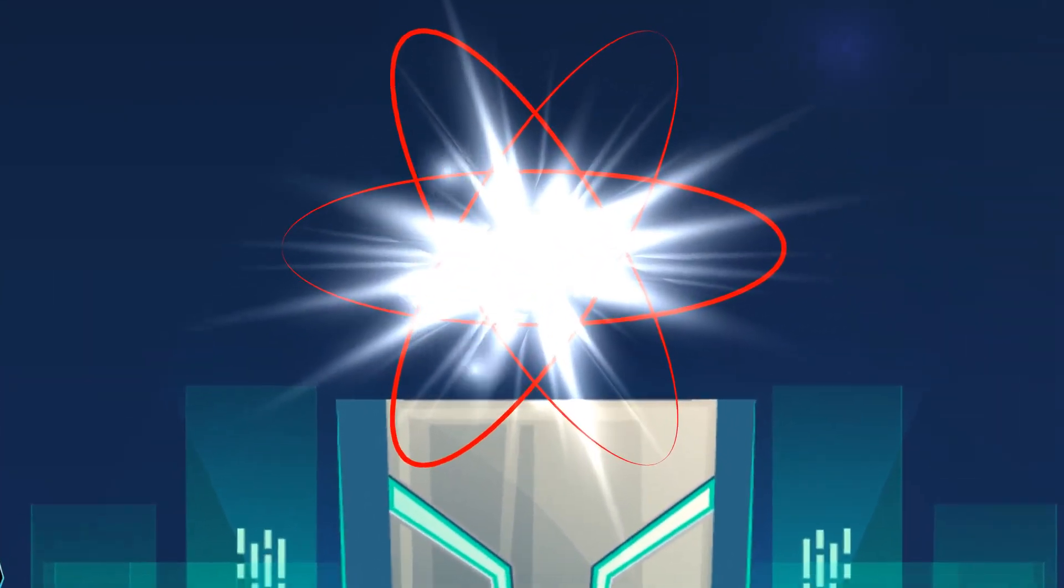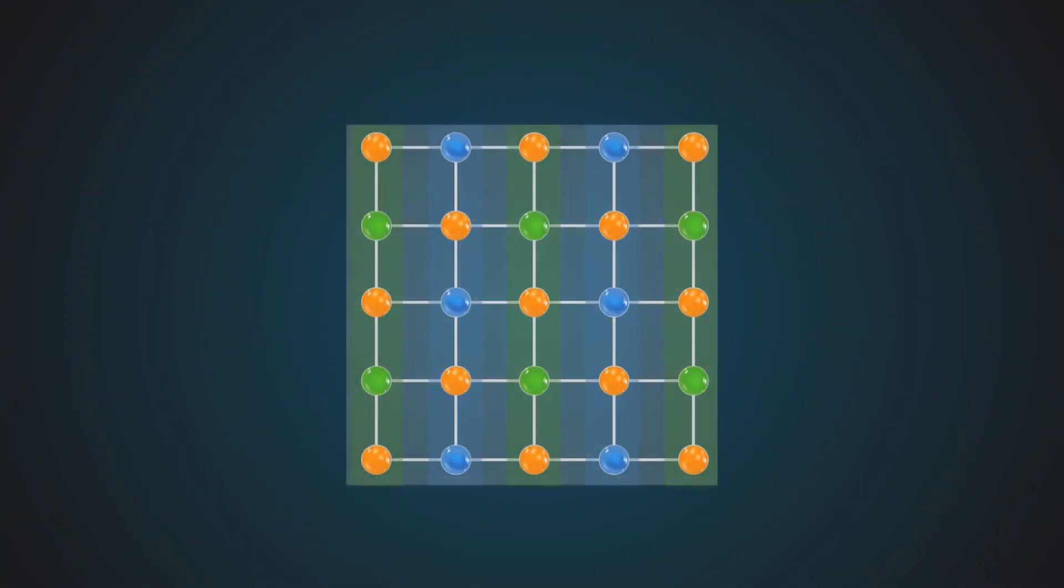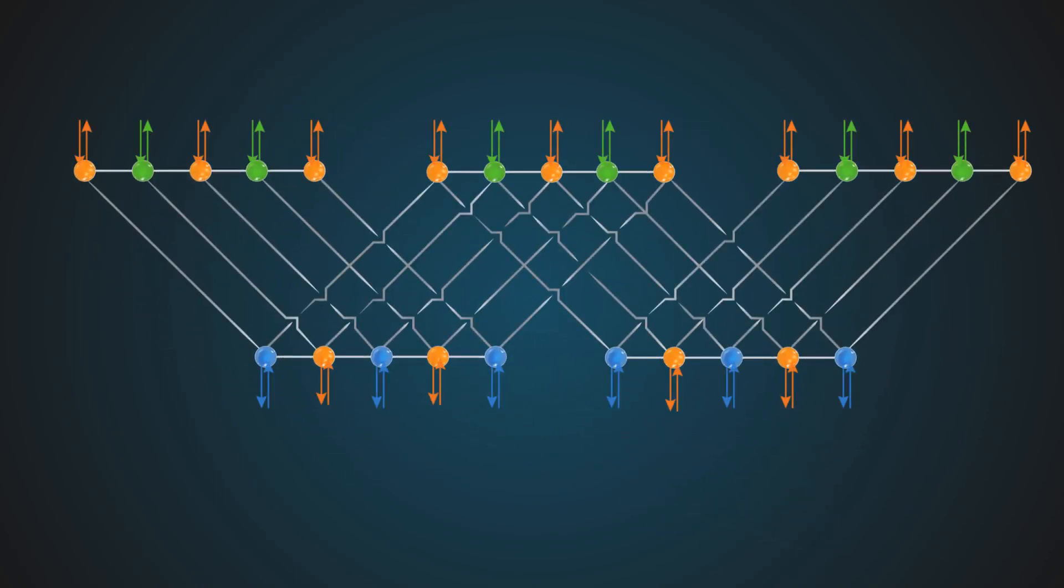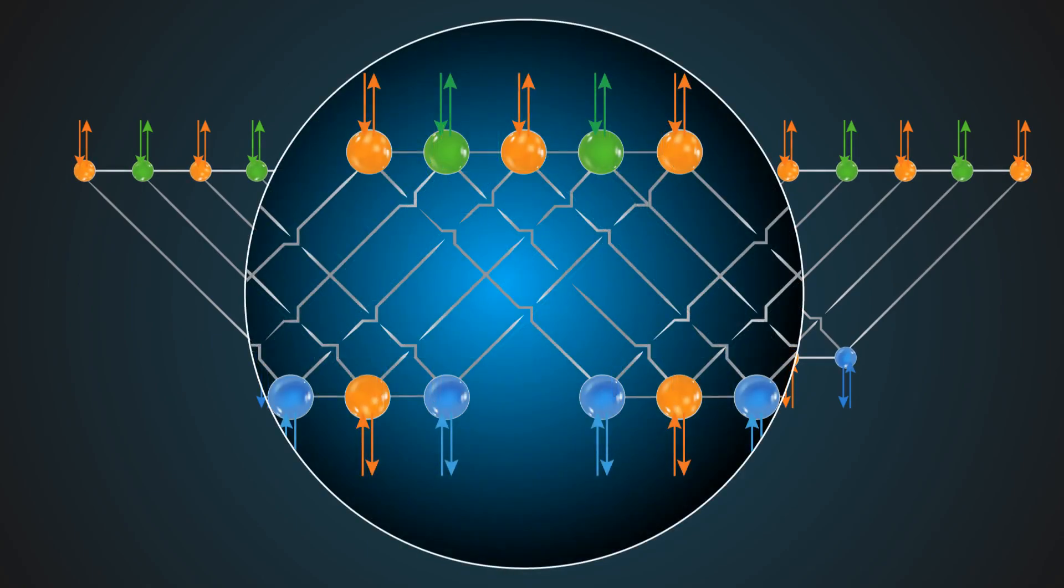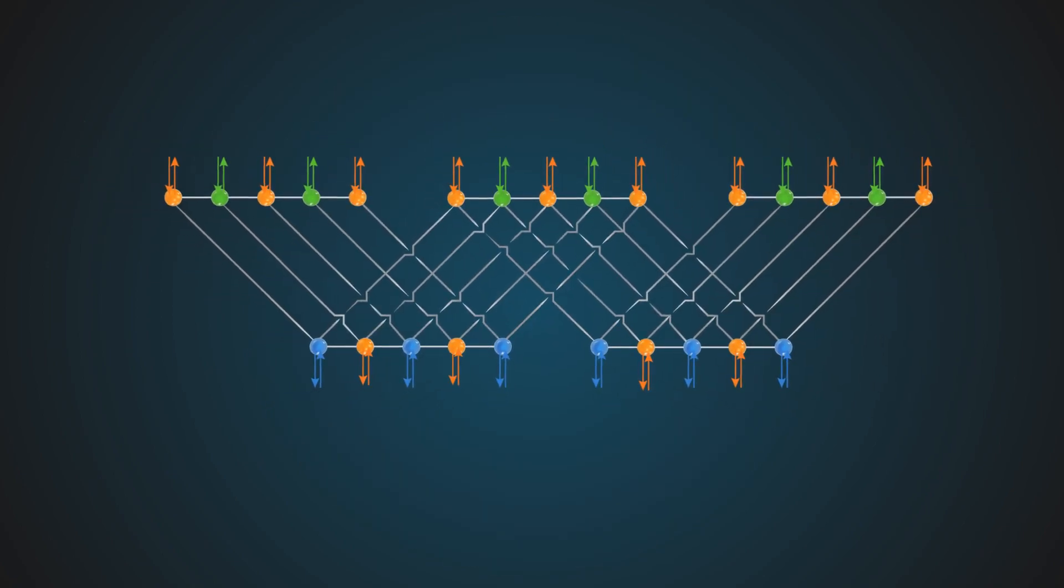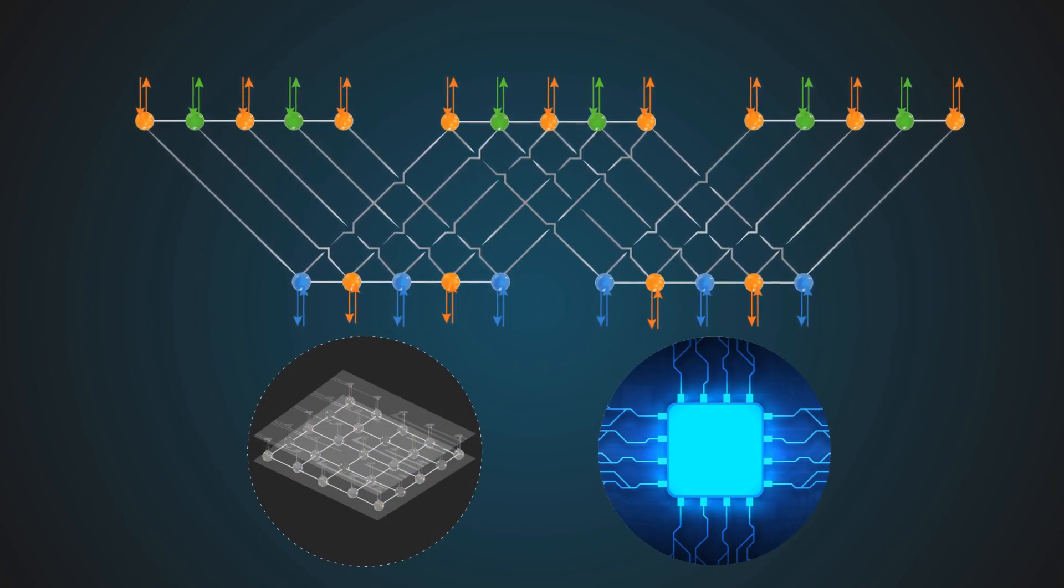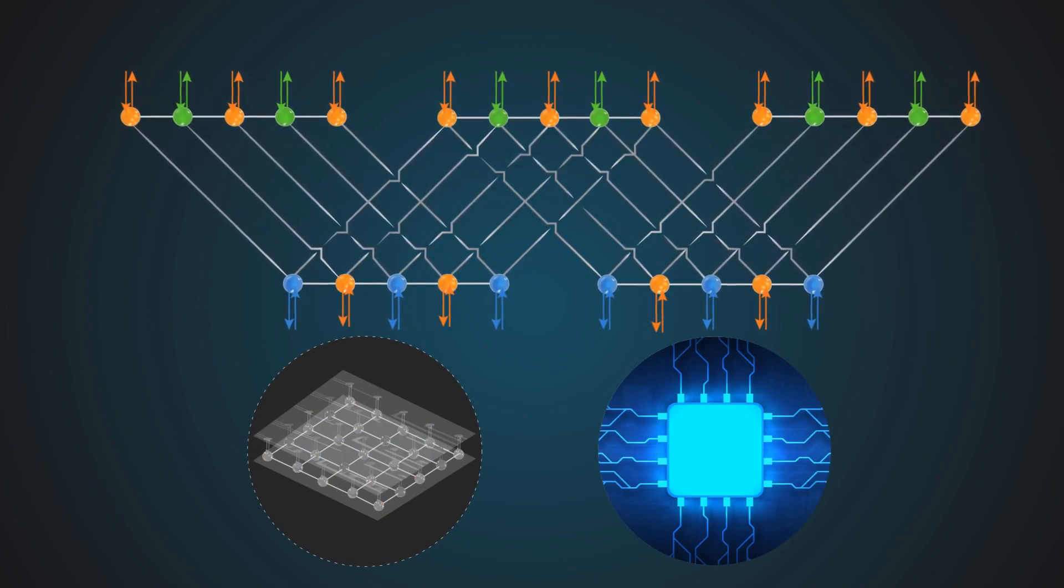The study reveals the development and successful testing of a novel pseudo-2D architecture that solves the wiring problem by placing all qubits at the edge of the network and connecting them through air bridges. This design is considerably simpler than 3D designs and can be constructed using existing 2D integrated circuit technology.